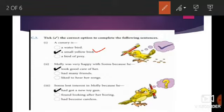Now you are being asked Molly was very happy with Somo because Somo took good care of her, or Somo had many friends, or Somo liked to hear her songs. Yes, the answer is because he took good care of her. Number three: Somo lost interest in Molly because he had got a new toy gun, found looking after her boring, or had become careless. Answer is had got a new toy gun.